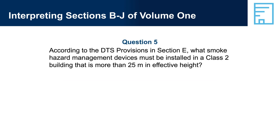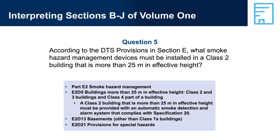Question 5: According to the DTS provisions in Section E, what smoke hazard management devices must be installed in a Class 2 building that is more than 25 metres in effective height? Part E2, smoke hazard management; E2D5, buildings more than 25 metres in effective height — Class 2 and 3 buildings and Class 4 parts of buildings. A Class 2 building that is more than 25 metres in effective height must be provided with an automatic smoke detection and alarm system that complies with Specification 20. E2-D13 basements (other than Class 7A buildings) have similar requirements as per E2-D5. E2-D21 provisions for special hazards: additional smoke hazard measures may be required if the building has special characteristics, functions, materials, or mix of building classifications. The relevant authorities will advise on whether this provision will be applied to a building.